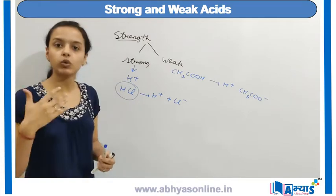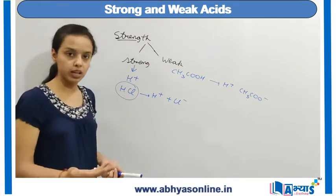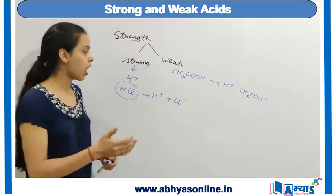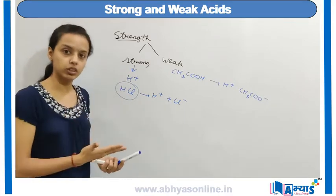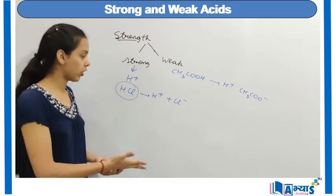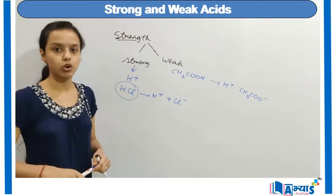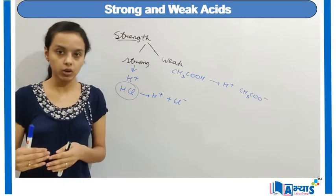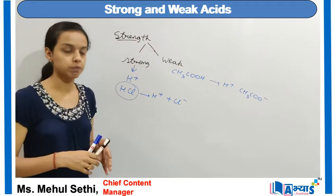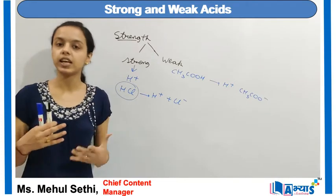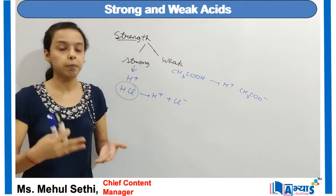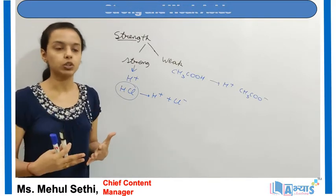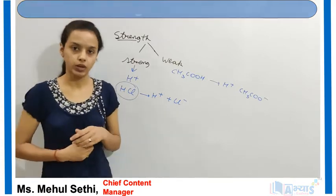Other examples of weak acids include tartaric acid and carbonic acid. However, sulfuric acid and nitric acid are examples of strong acids. This was the classification of acids based upon strength. In the previous video, the classifications of acids based upon their composition were discussed — refer to that video also, offered by Abhyas only.